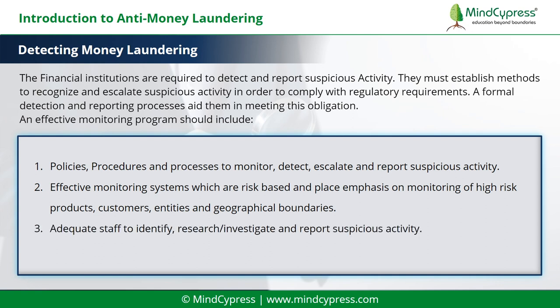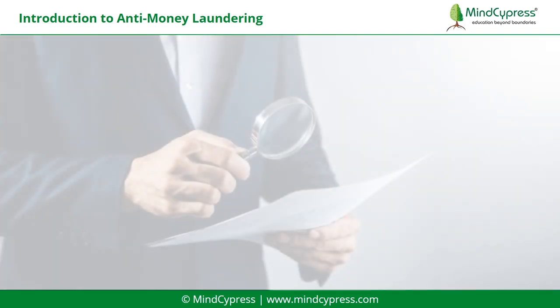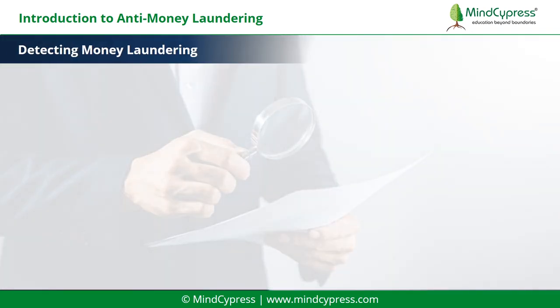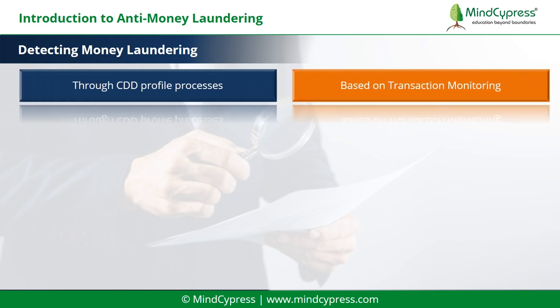3. Adequate staff to identify, research, investigate, and report suspicious activity. 4. Training of employees to recognize and escalate unusual or potentially suspicious activity. Let's discuss methods of detection. There are two types: first, through CDD profile processes; second, based on transaction monitoring.